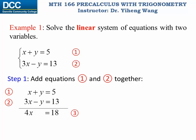So we achieve this third equation that only has one variable, which is x. Therefore for step two, we can simply solve for x from equation three, and x equals 4.5.